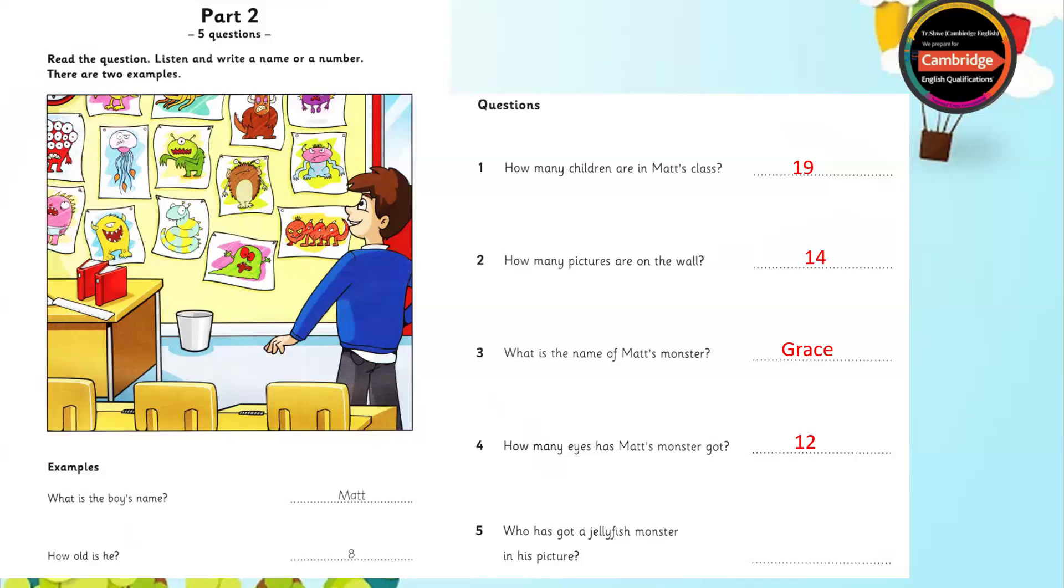Five. Whose is this picture? The one with the jellyfish monster? It's my friend Bill's. You spell his name. B-I-L-L. Bill! Okay. His monster is very scary. Yes, it is. And ugly. What a great classroom. Thanks. That is the end of part two.